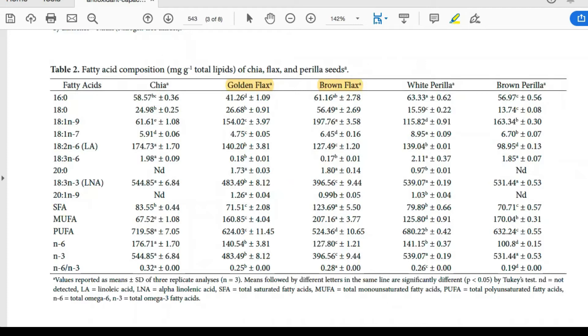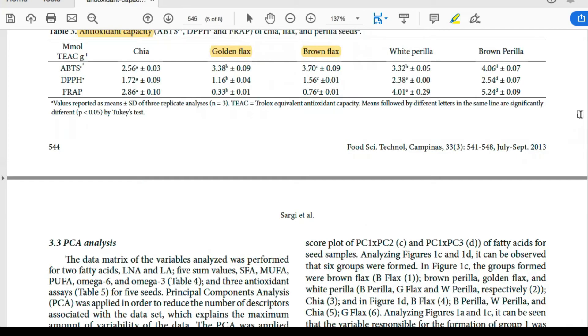In regards to golden flax versus brown flax, they found that the golden species had high levels of omega-3 and omega-6 fatty acids, while the brown flaxseeds showed a higher antioxidant capacity than golden flaxseed.